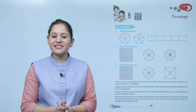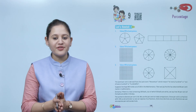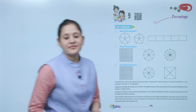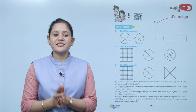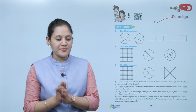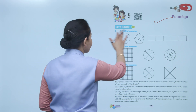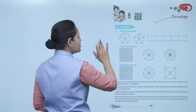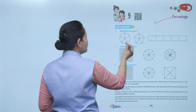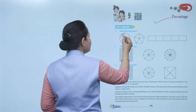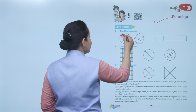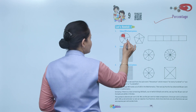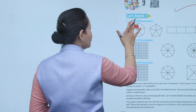Hello kids, welcome to today's maths class. Today we will do percentage. Let's revisit: colour 20% of each picture. The picture is divided into 5 equal parts, so one part will represent 20%. 20 plus 20 plus 20 plus 20 plus 20 — each part represents 20%.